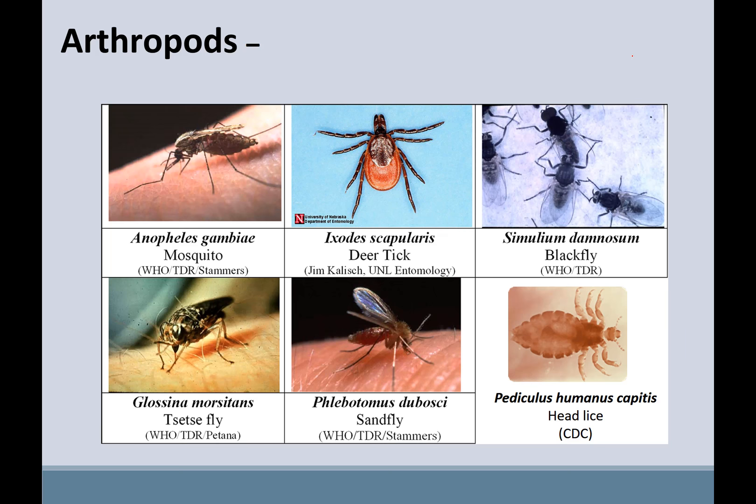Helminth therapy — purposely infecting yourself with some worms — is being explored so that your immune system becomes activated and potentially stops attacking yourself. Our last group, arthropods, aren't really pathogens themselves but are vectors — methods of transmission. These biting insects feed on humans and animals, getting blood meals, and by doing that they can transmit pathogens including protozoa, some helminths, and viruses.